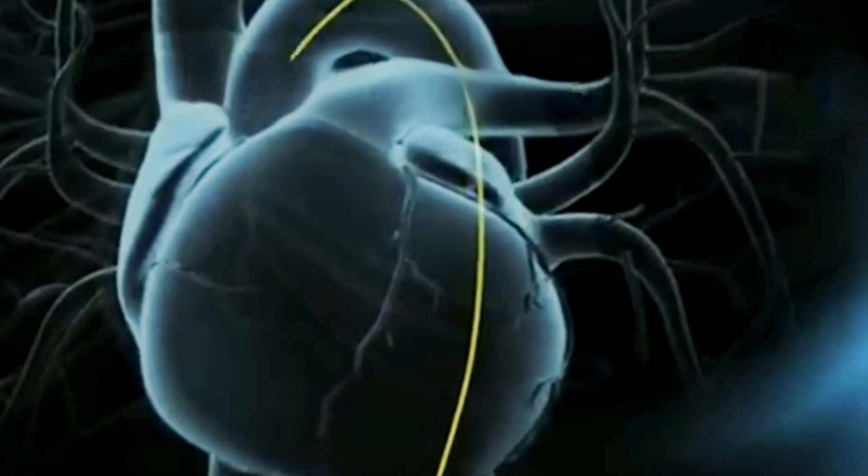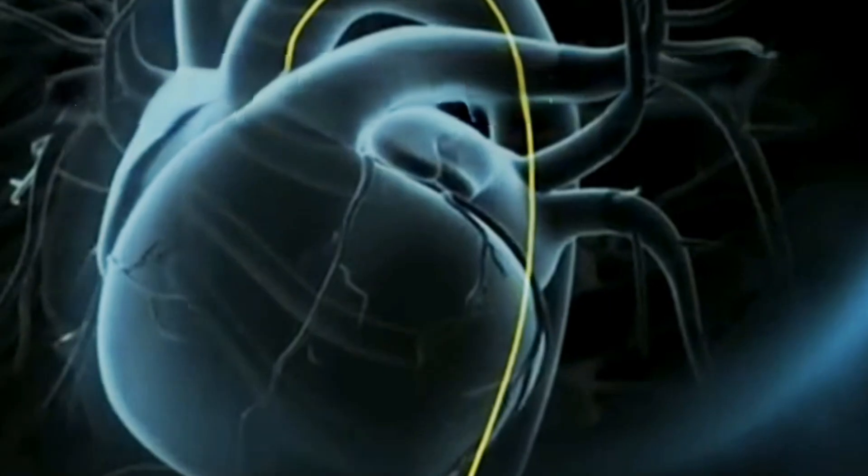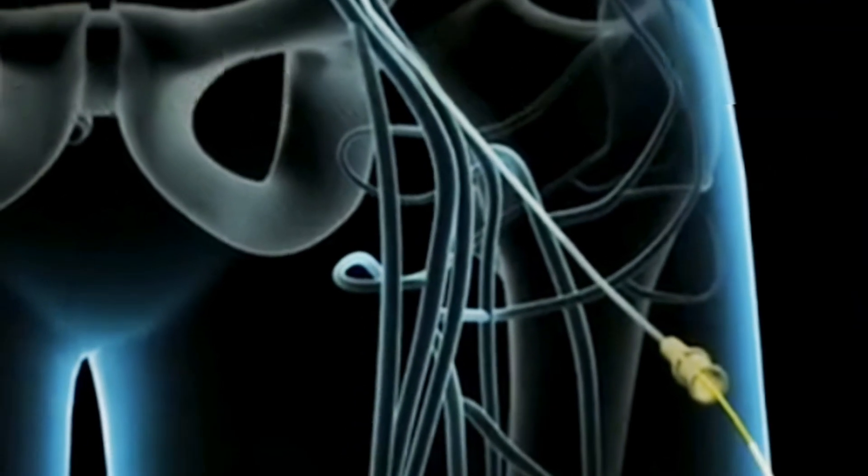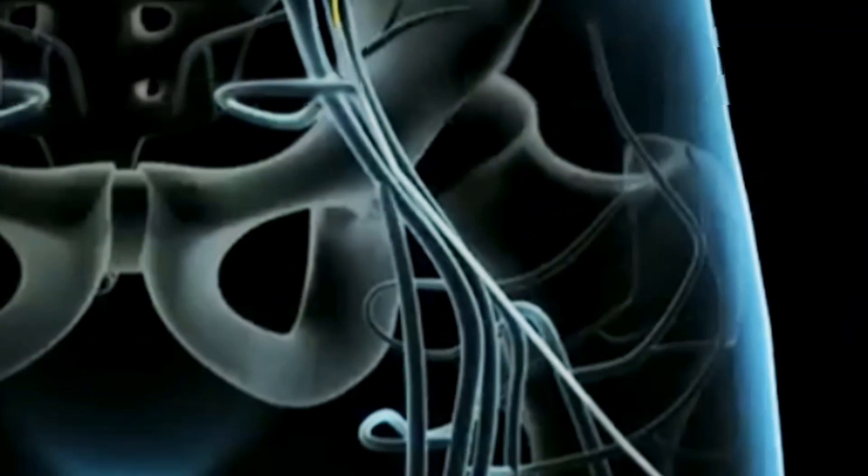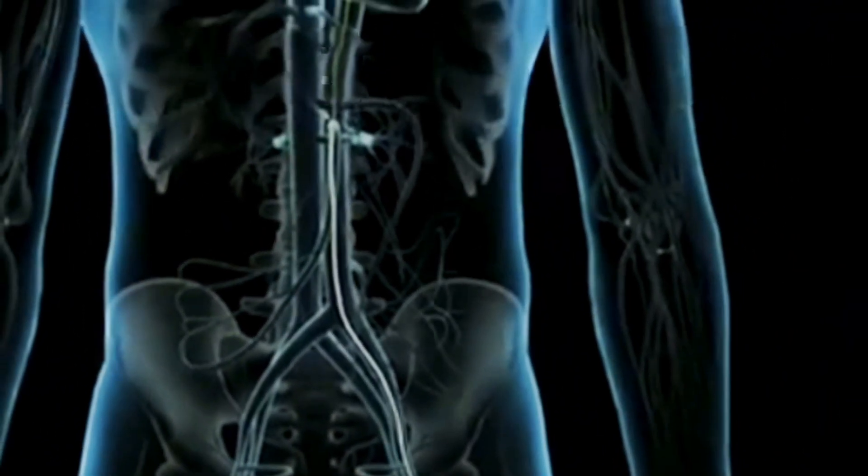At this point, you will be given a blood thinner to reduce the risk of blood clots. Next, a soft flexible catheter is slipped over the wire and threaded up to the heart. The procedure is monitored using a continuous x-ray imaging device called a fluoroscope.